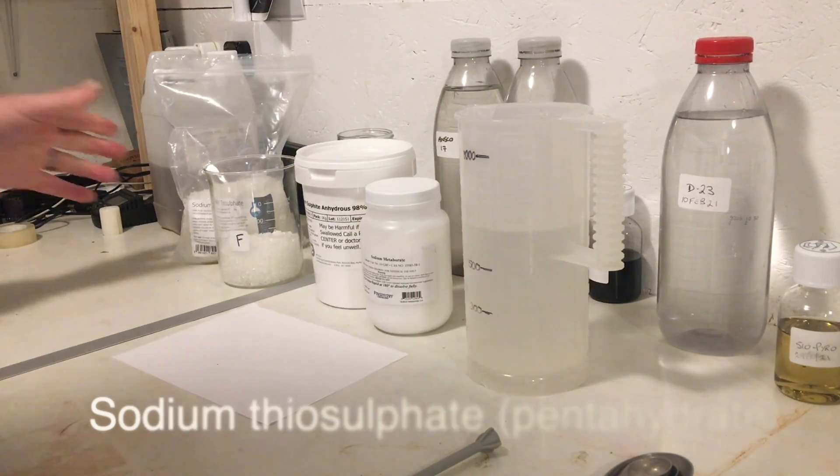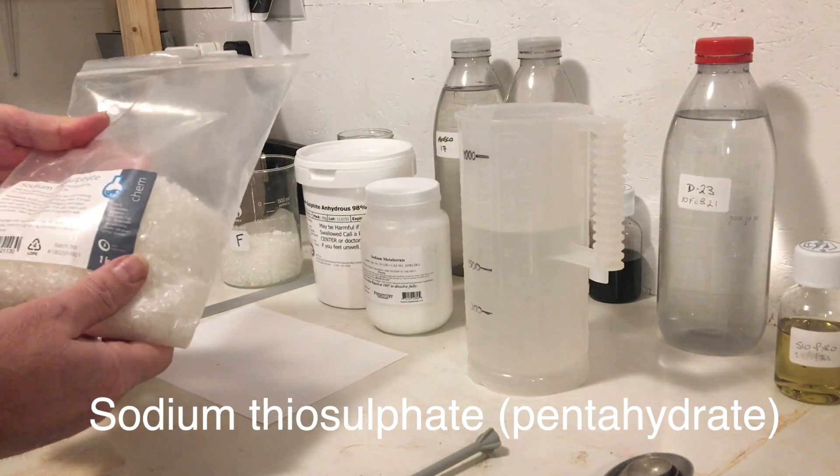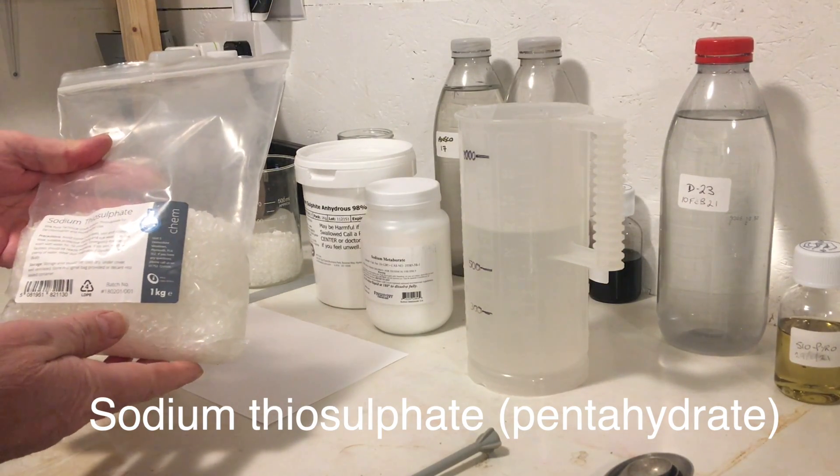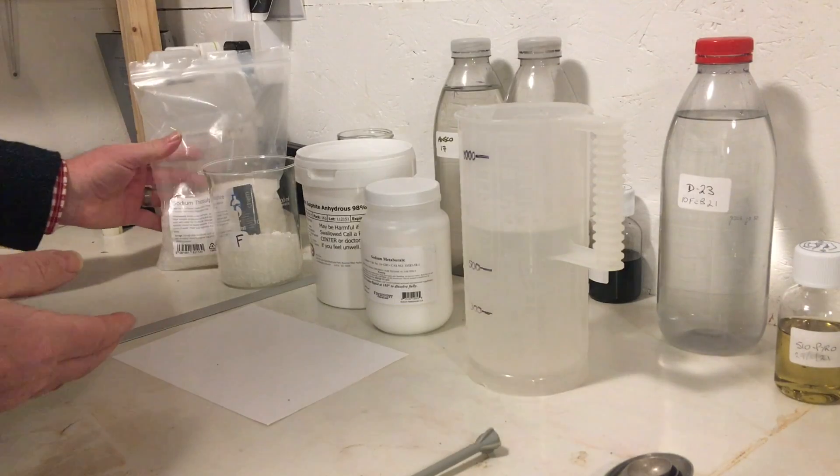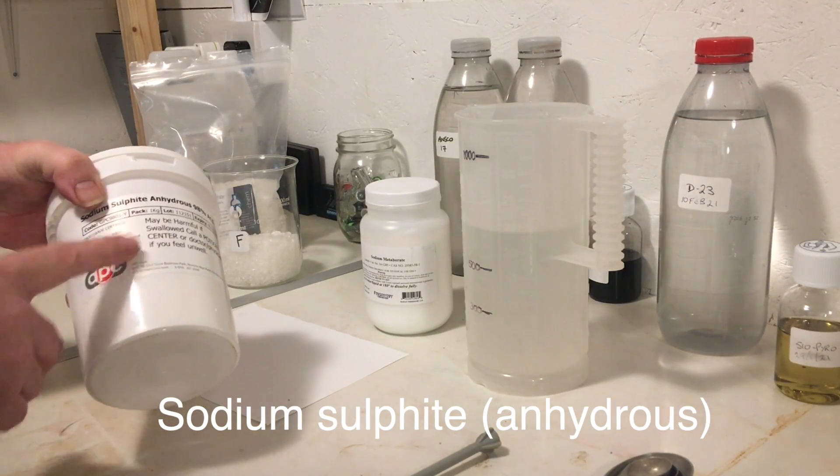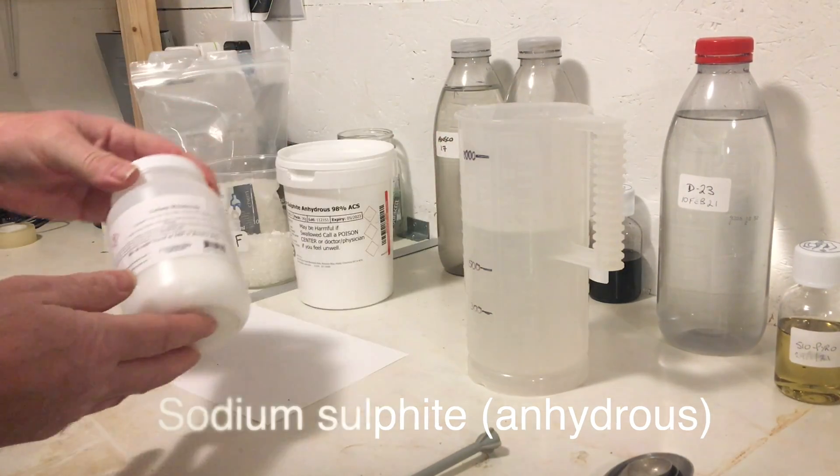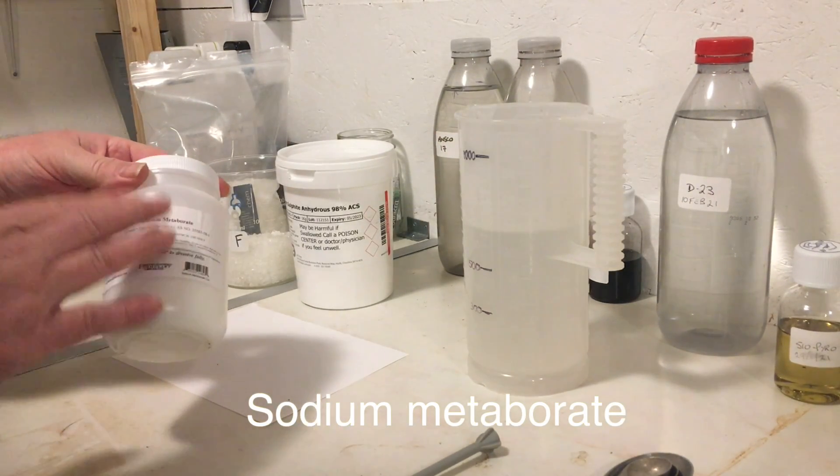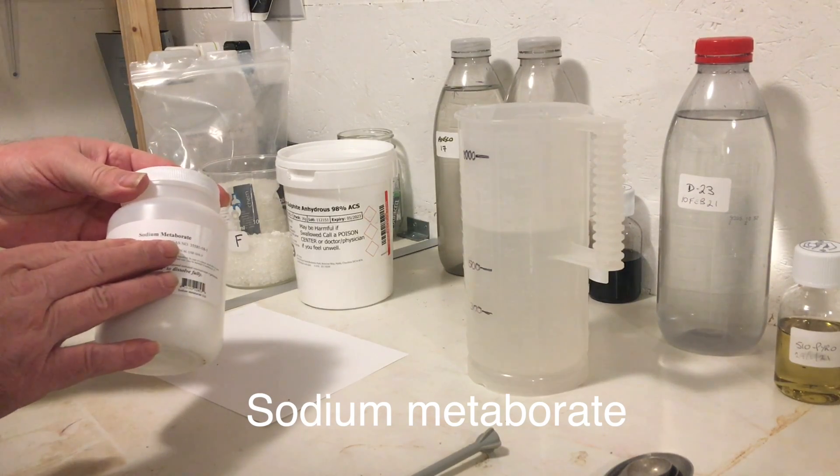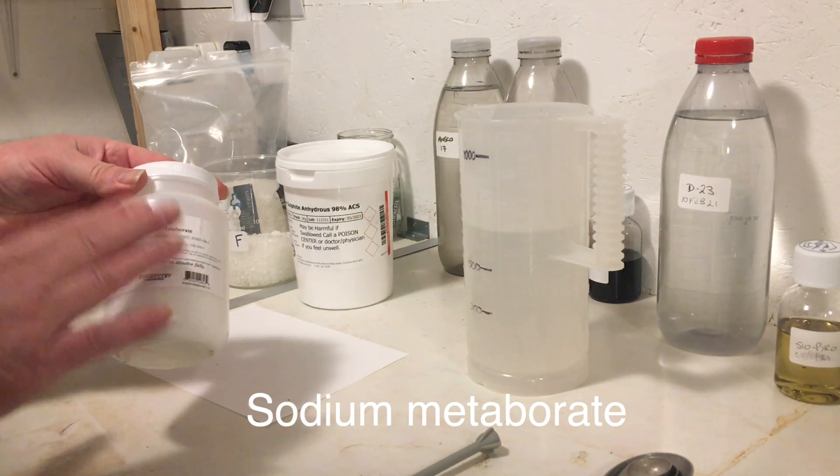What are we going to need to make this? Well, this is the pentahydrate crystalline version of sodium thiosulfate. We're going to need sodium sulfite. We use that already making the D23. And we're going to need sodium metaborate. This can be hard to get hold of outside of the United States, and so I'll give you a tip on how to make this for your alkaline fix.